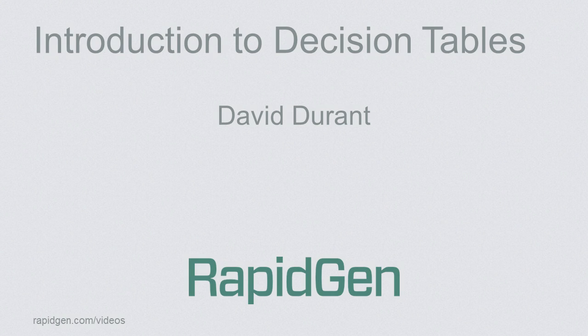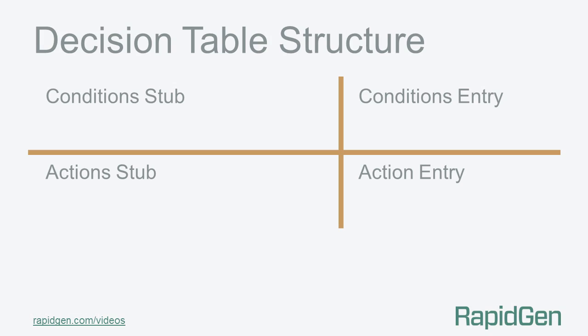Besides the name of the table, every decision table has four parts to it: the condition stub and its entry, and the action stub and its entry.